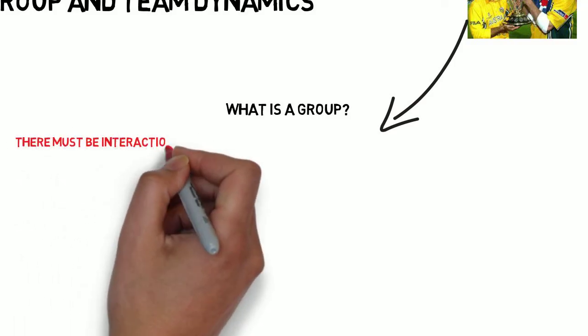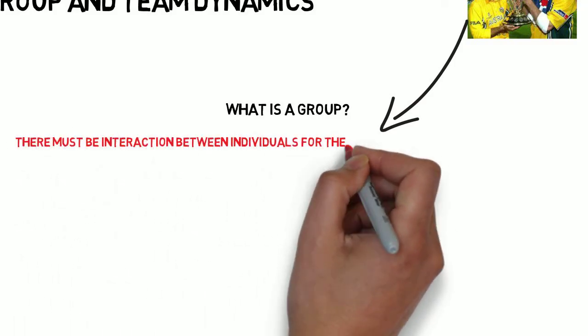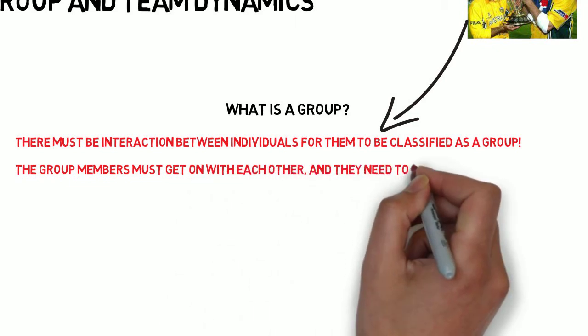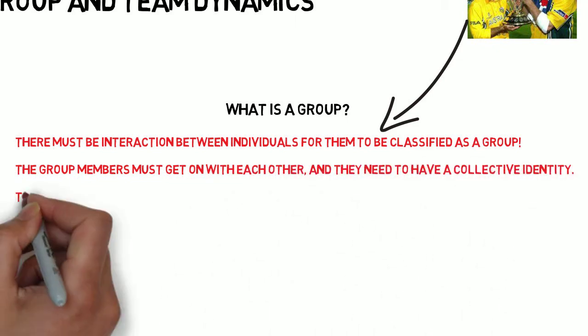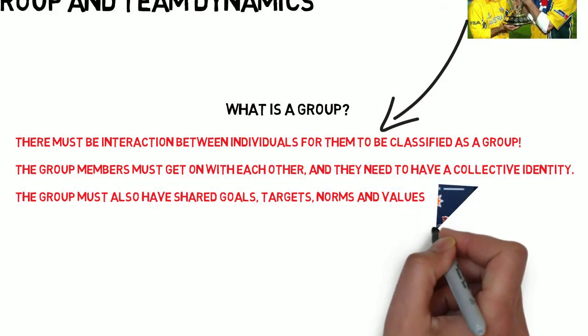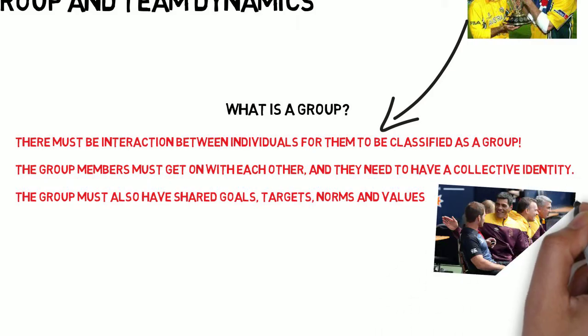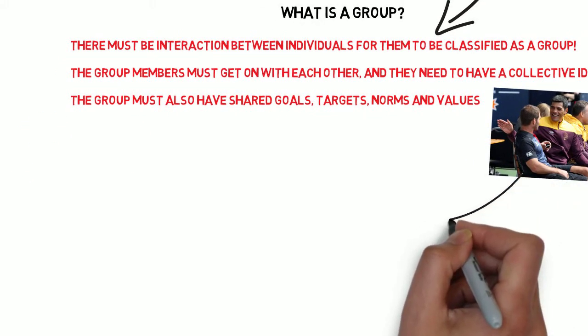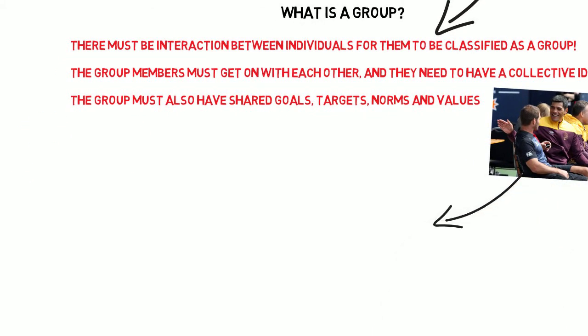A group must involve interaction between people to be classified as a group. The group must be able to get on with each other and have a collective identity. Usually this means they've got to have some kind of shared goals and targets. It doesn't mean you have to be best friends, but you've got to have the same kind of values.